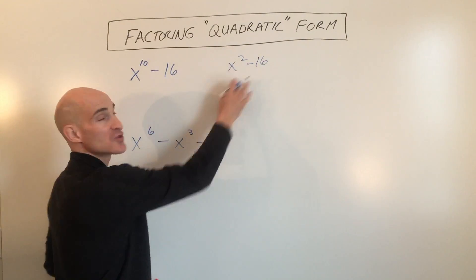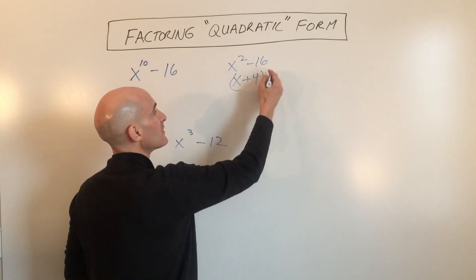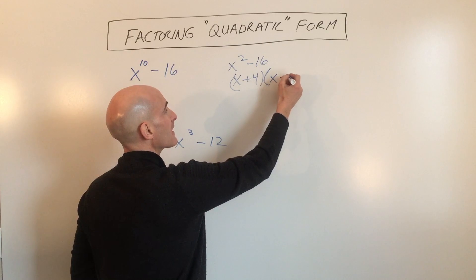Right? It's just a difference of two squares. We would just factor it as x plus 4, times x minus 4.